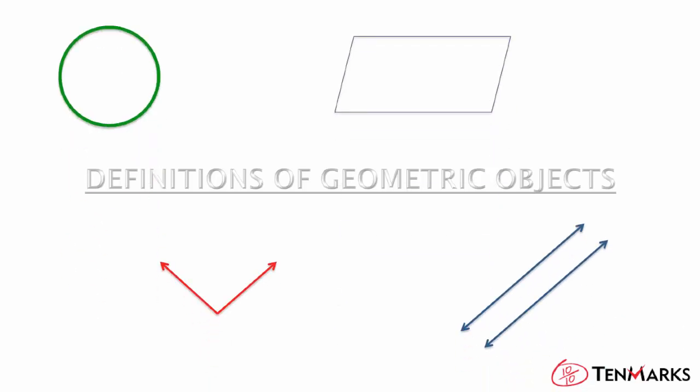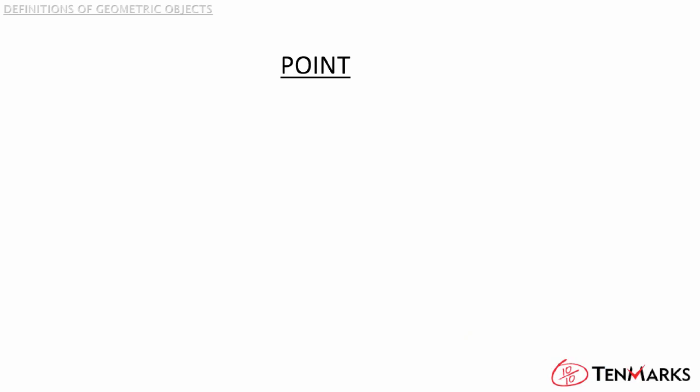This video will talk about the definitions of geometric objects. In geometry, a point specifies a location. It doesn't have length, width, or depth. A point is not a thing, but a place, which means it doesn't have any dimensions. In fact, it's one of the undefined terms in geometry. An undefined term means something we accept as true and can use as a building block for the rest of the subject. You'll be learning about three undefined terms in this video.